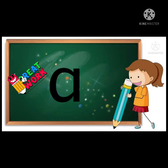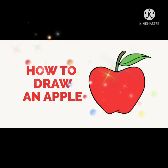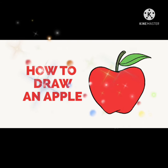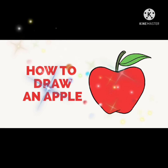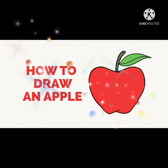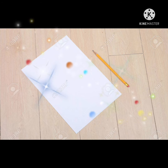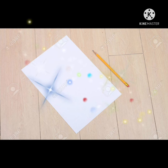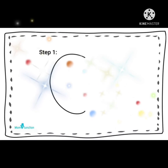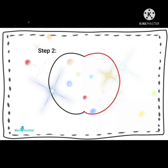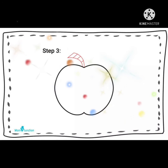This is letter A. My dear children, now we are going to draw an apple. Okay, let's see how to draw an apple. Take an apple paper and a pencil. Now draw a big left side curve, then draw a big right side curve.